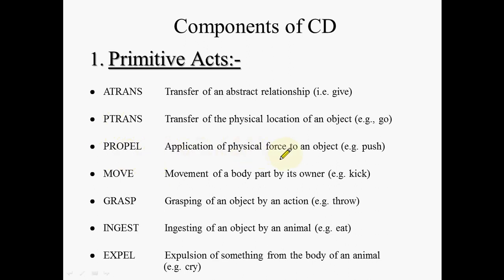MOVE is the movement of a body part by its owner — for example, kicking (moving your legs) or punching (moving your hand). Many similar actions are grouped under the common act MOVE. GRASP is the grasping of an object by an actor — for example, catching hold of someone's hand, or grasping a stone before throwing it. INGEST is the ingestion of an object by an animal — for example, eating. EXPEL is the expulsion of something from the body of an animal — for example, crying, where tears are expelled from the body.